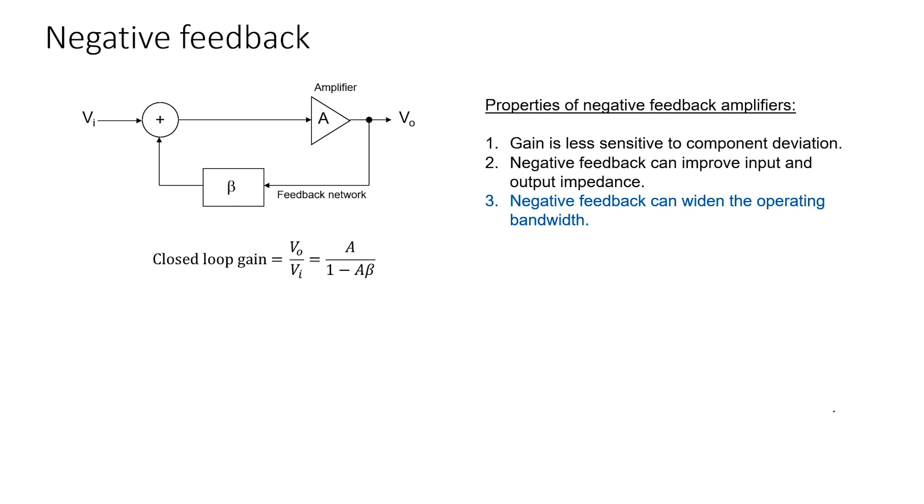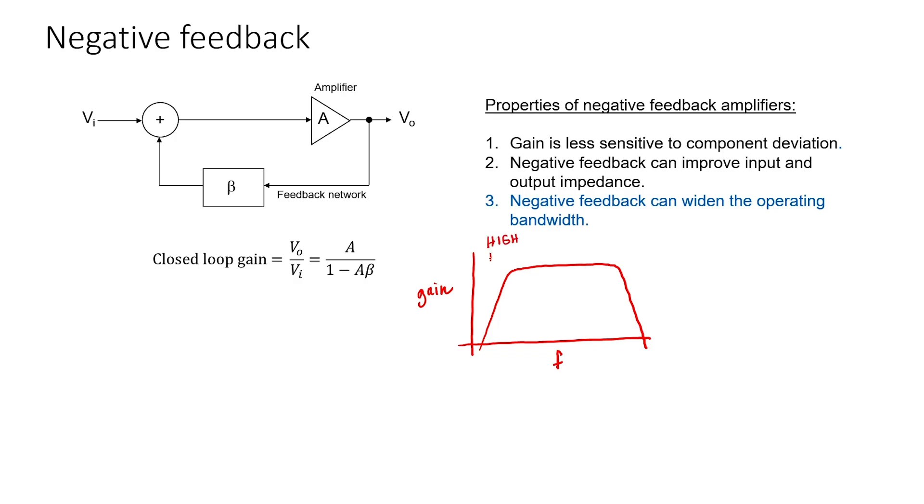Thirdly, negative feedback can widen the operating bandwidth of an amplifier. In an amplifier, what we typically want is for the gain to be flat with respect to frequency. But this is usually not the situation. An amplifier will have a low-frequency cutoff and a high-frequency cutoff for various reasons, for parasitics at the high frequencies and for blocking capacitors at the low frequencies. We're always going to have a high-pass side and a low-pass side. Negative feedback can sacrifice some of the gain and widen the operating bandwidth.